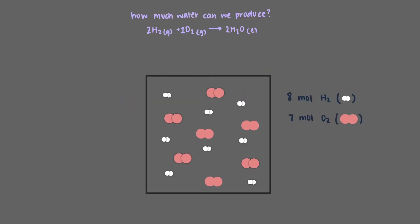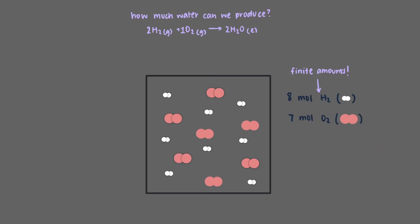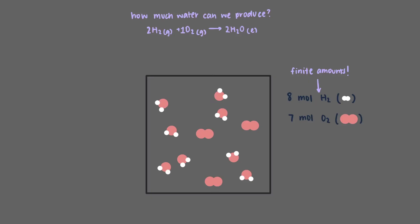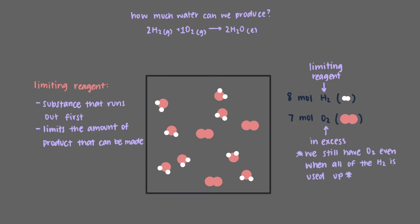So what about the first container? It doesn't have an infinite amount of either reactant — it has a finite amount of both. If the reaction were to proceed, which reactant would run out first? We see that 2 hydrogen molecules react with 1 oxygen to make 2 waters. Continuing this process, we run out of hydrogen first, with oxygen molecules still remaining. So hydrogen is our limiting reagent — it limits the amount of product that can be made. Oxygen is in excess because some remains even when all the hydrogen is used up.